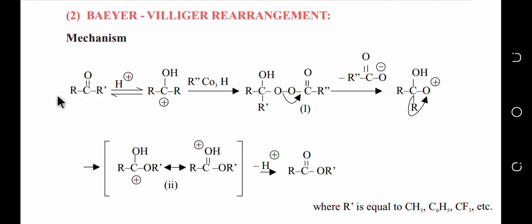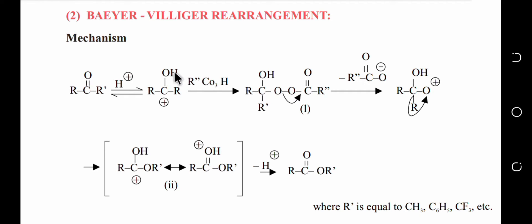Let's start the mechanism. First, we use a ketone — for example, acetone. The oxygen in the ketone has a lone pair, so it can accept an electrophile — that is, a proton. After protonation, the oxygen becomes attached to hydrogen, and one bond breaks toward the oxygen due to electron transfer occurring from oxygen toward hydrogen.